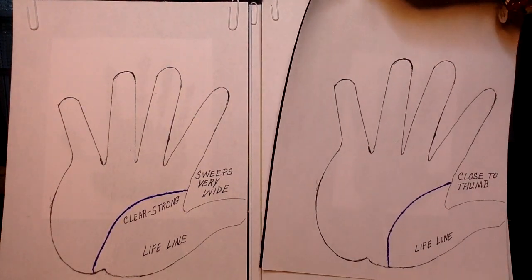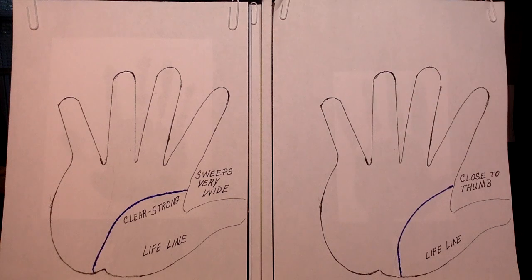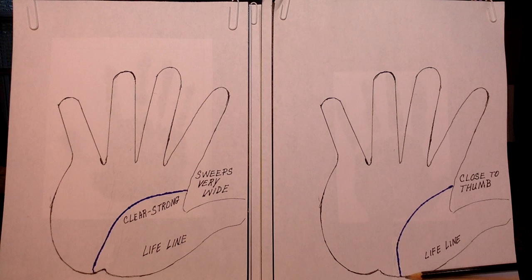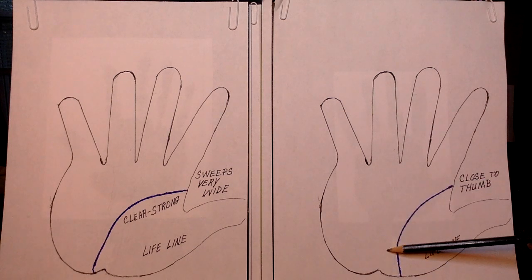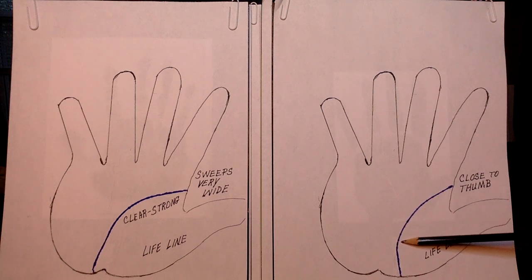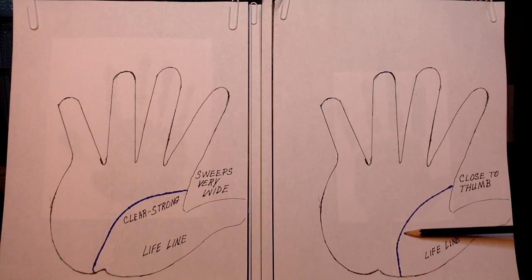And here we have one that's close to the thumb. You see? It starts that turn before the center point. It's almost like straight down, almost. Okay, close to the palm. Close to the thumb, sorry. When you have a lifeline that's almost straight and stays closer to the thumb, this shows caution and timidity.